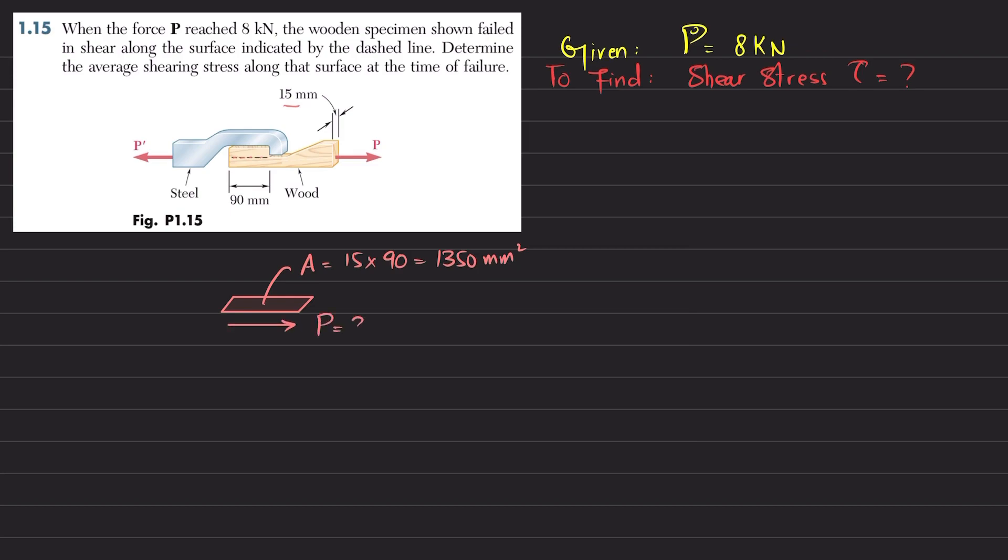And the shear force acting on this area will be equal to P, equal to 8 kilo Newton. So the solution is that the area being sheared where this failure caused is equal to 15 millimeter multiplied by 90 millimeter, and that is equal to 1350 square millimeter.